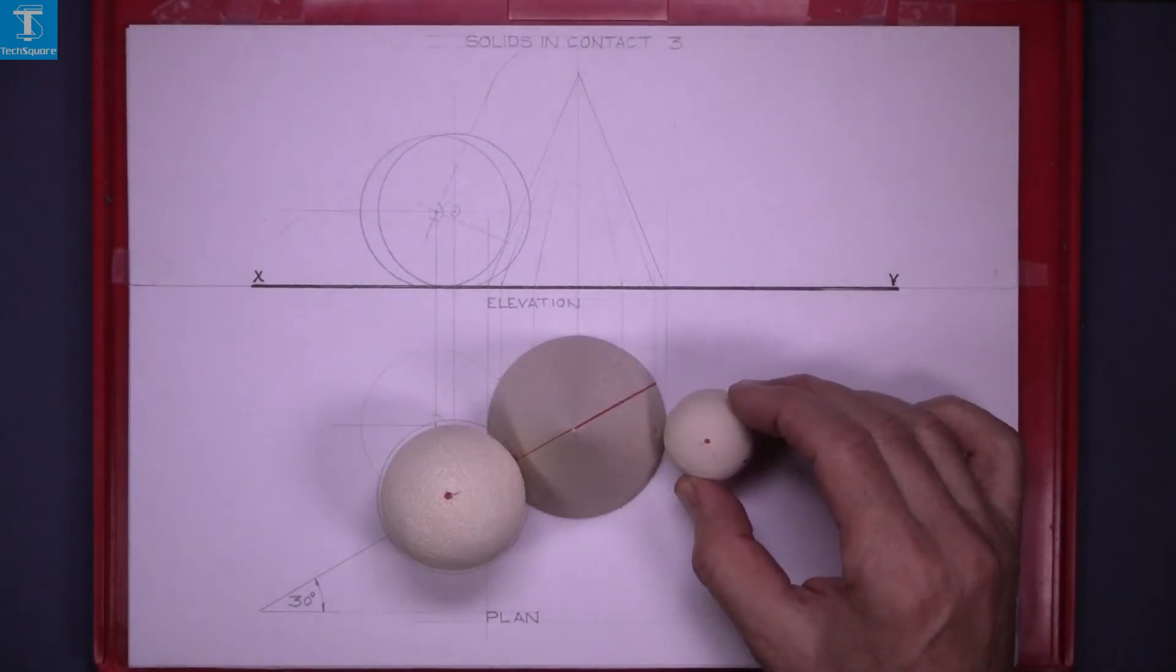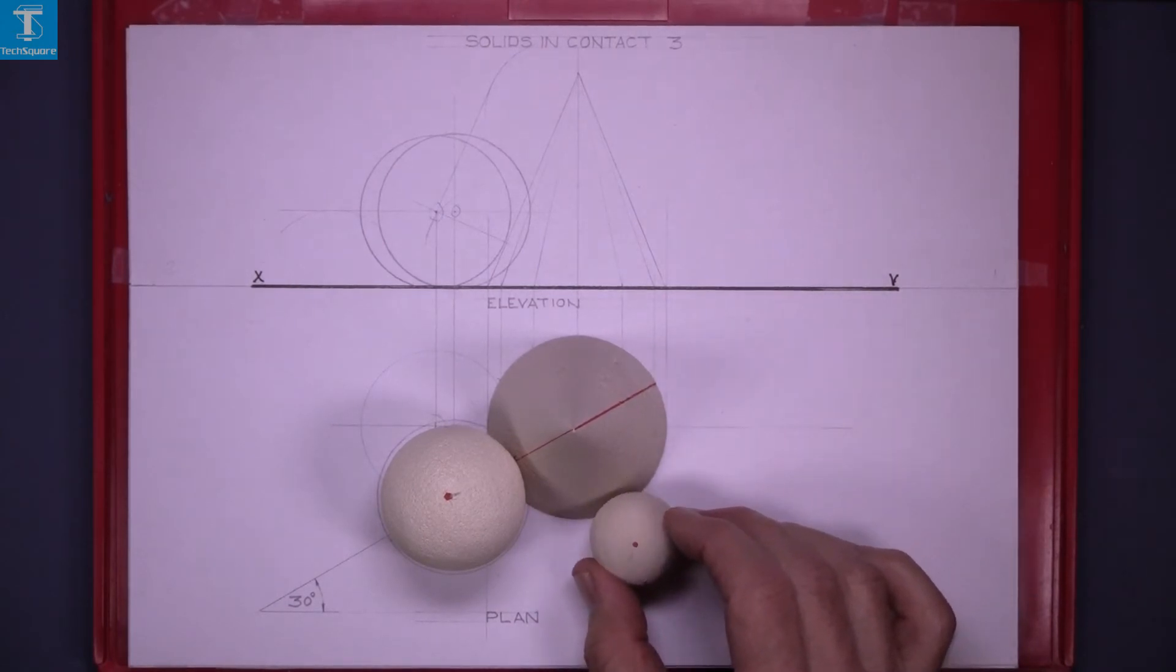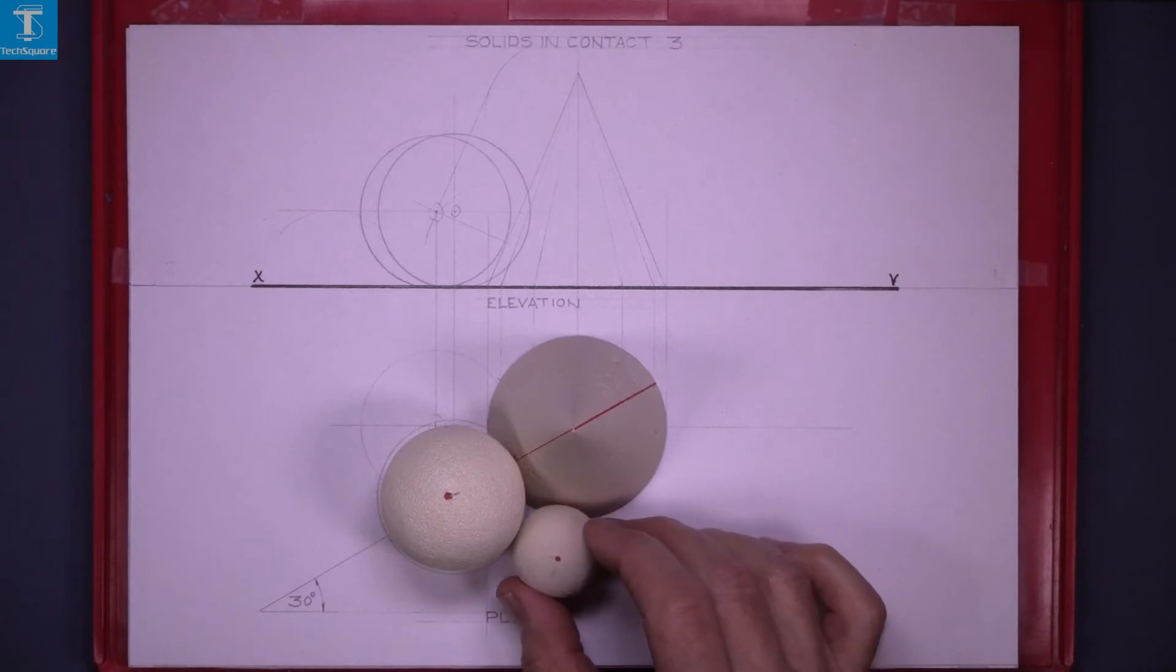Now we are going to do the same with the cone as in Solids in contact 1 and we will rotate it around the cone until we get into this position.